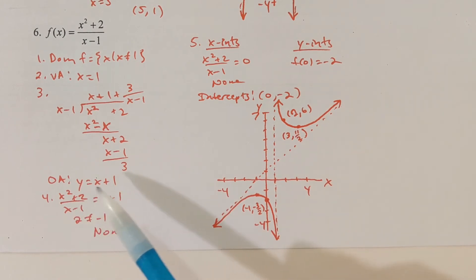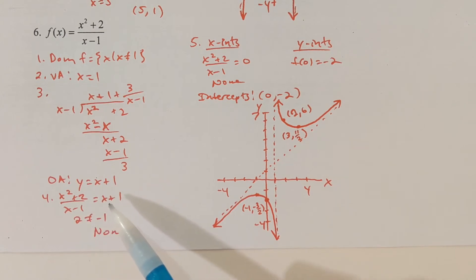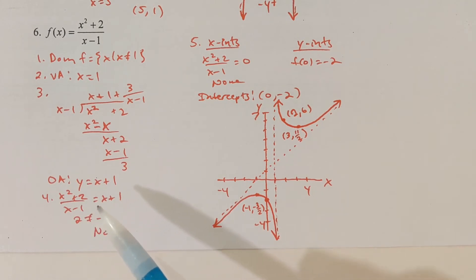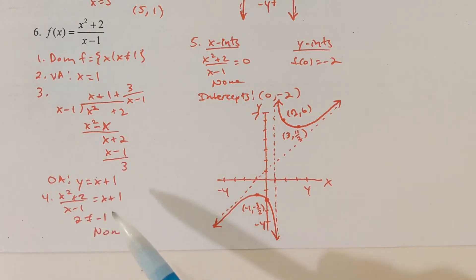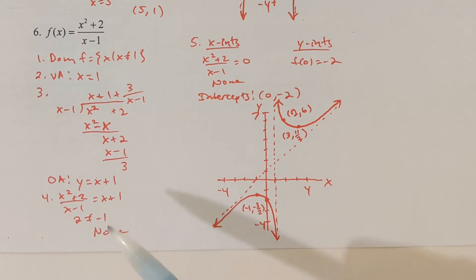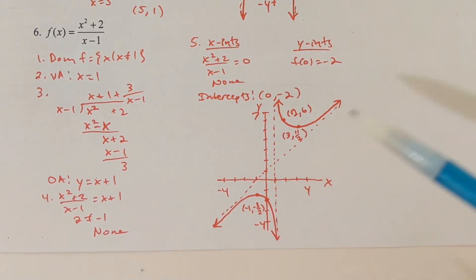To check if we cross the oblique asymptote: set x squared plus 2 divided by x minus 1 equal to x plus 1, multiply both sides by x minus 1, and subtract x squared from both sides. We get 2 equals negative 1 — x is eliminated completely, so there's no point at which the graph crosses the asymptote.